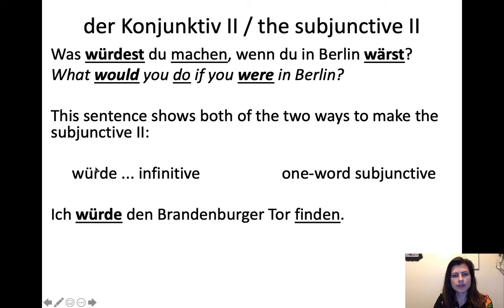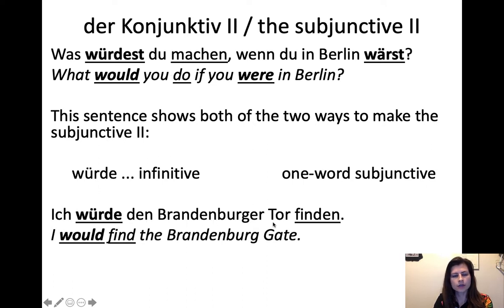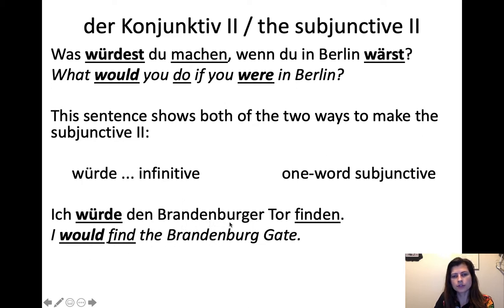On the left we have würdest du machen — würde plus an infinitive. On the right we have wärst, which is the one-word type of Konjunktiv zwei. For example: "Ich würde den Brandenburger Tor finden" — I would find the Brandenburg Gate. Würde is in the normal second position, and the infinitive goes at the end. So: "Ich würde den Brandenburger Tor finden" — I would the Brandenburg Gate find.